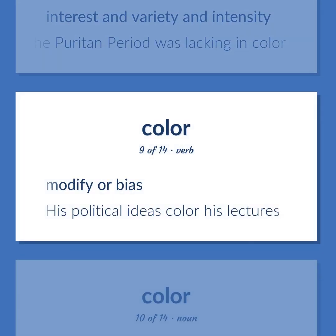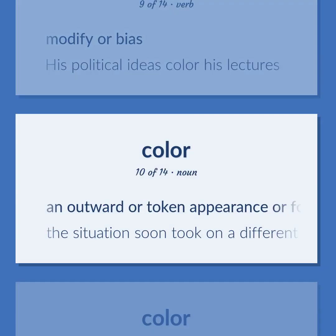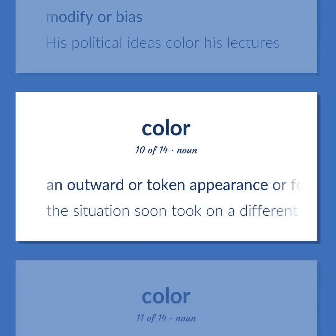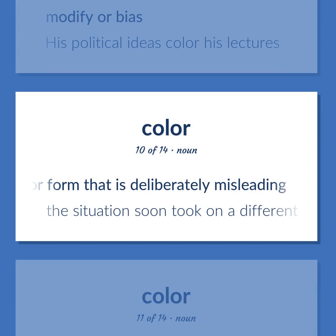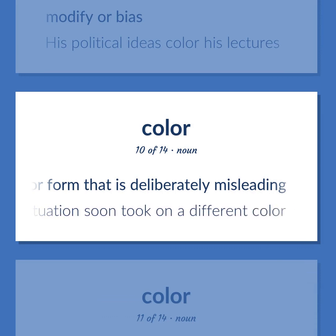Modify or bias. His political ideas color his lectures. An outward or token appearance or form that is deliberately misleading. The situation soon took on a different color.